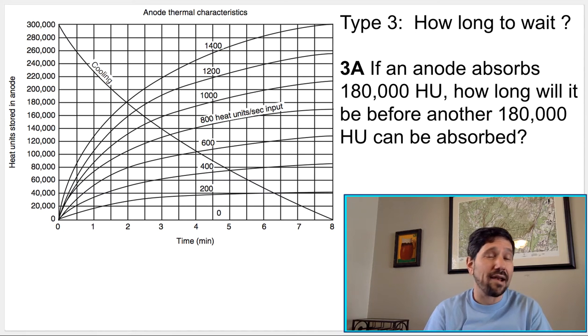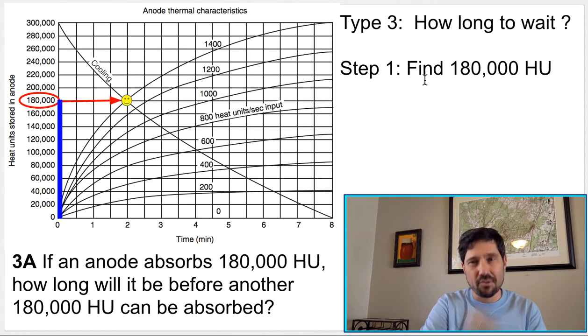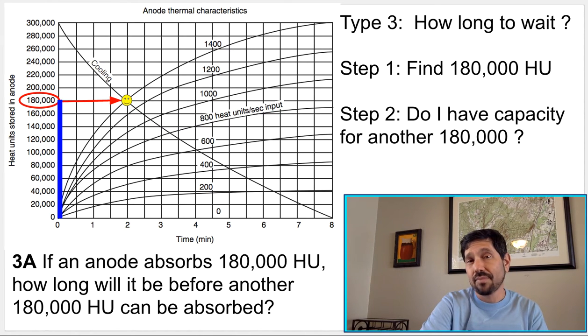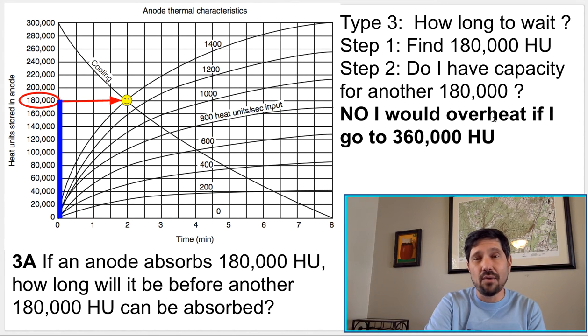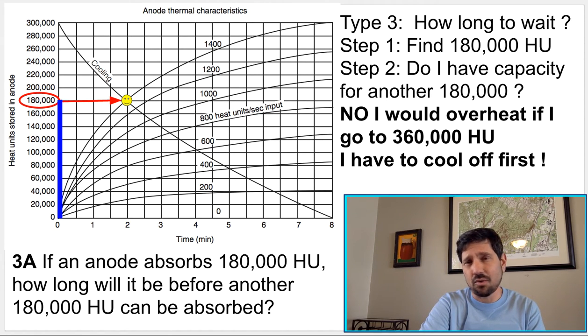Type three are the trickiest yet. Type one, we said, show me the extreme max heat unit, show me the extreme time to cool. Problems two, we said here, I gave you a heat unit so we could have fallen at a different time, and we wait to cool completely. Here, we're going to have some more tricks. So here, if an anode absorbs 180,000 heat units, how long do you have to wait before it can absorb another 180,000 heat units? So here, we'll do that first 180,000. That brings us here. And then we'll say, can I do another 180,000? If I didn't wait at all and I tried another 180,000, it would overheat. It would go to 360,000, and the max is 300,000. So it won't let me run that technique. So I have to cool off first. And the question is, how long do I have to wait?